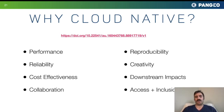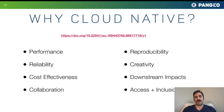We recently released a preprint outlining the principles underlying cloud-native scientific research. We identified eight motivating factors: performance, reliability, cost-effectiveness, collaboration, reproducibility, creativity, downstream impacts, and access and inclusion — all facilitated by migrating workflows to the cloud. I won't go through all of these, but I'll draw out a few highlights.